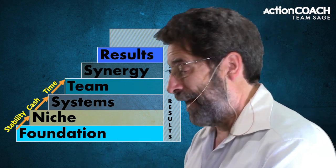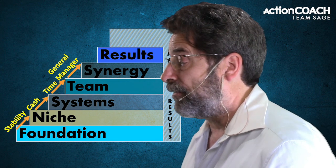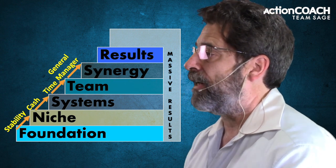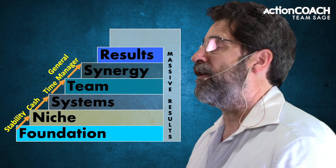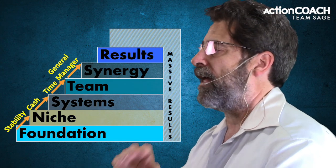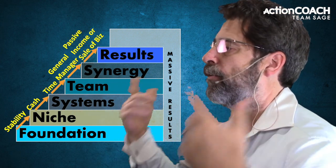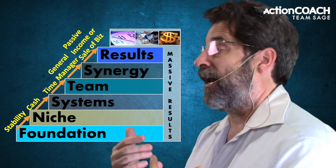Once we have the structure for growth in place, we can bring in team leaders or a general manager so we don't have to be there all the time. That brings us to the fifth step — synergy — where we take a step back, turn up the volume, clean up any cracks in the foundation, and make sure marketing, systems, and team are all working perfectly. That automatically takes us to the sixth step: results — where we get the business that truly runs without us, giving us the time, money, and freedom we went into business for in the first place.